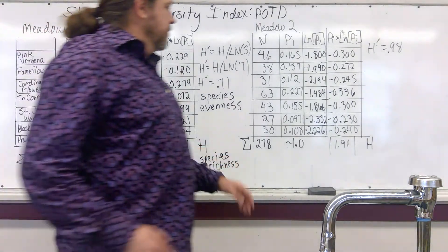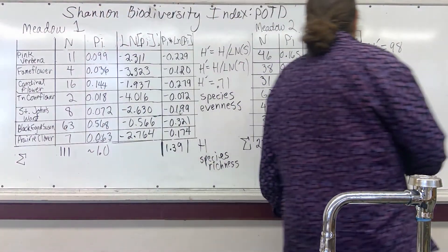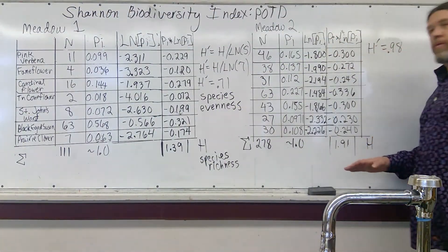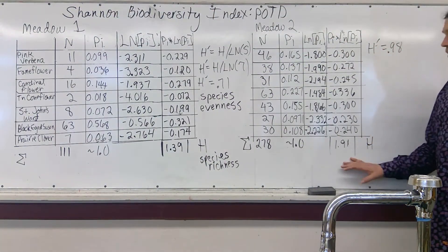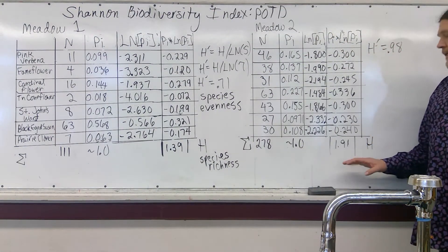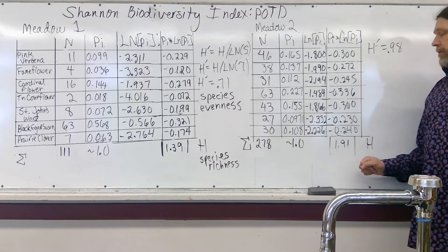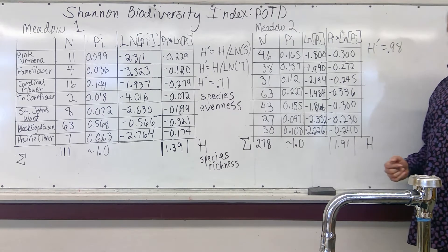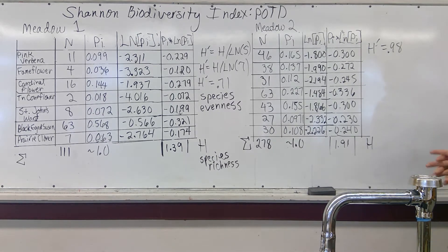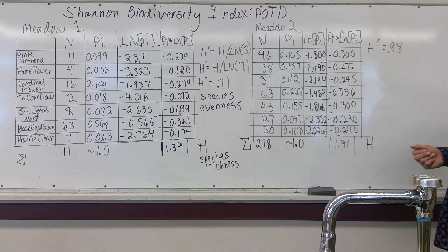Doing the same calculation for Meadow 2, not surprisingly, we find that Meadow 2 is considerably more diverse, with a species richness score of 1.9.